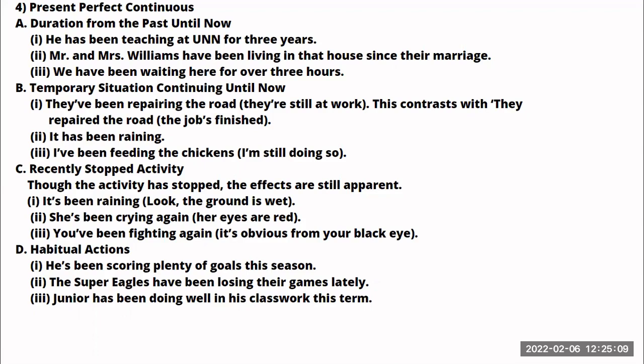All these various examples give you a clear picture of how to use the present perfect continuous tense. The third example: 'We have been waiting here for over three hours' — it's something we started over three hours ago and it's still going on right now. When you are losing your patience, you can say: 'We have been waiting here for over three hours.'